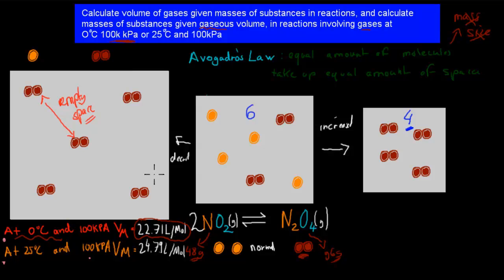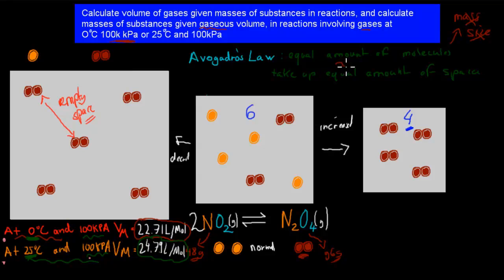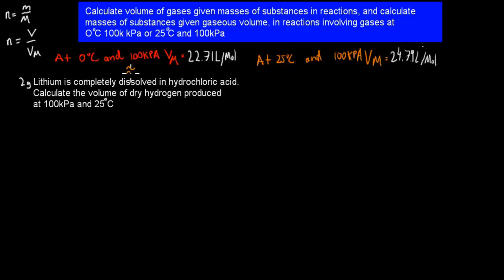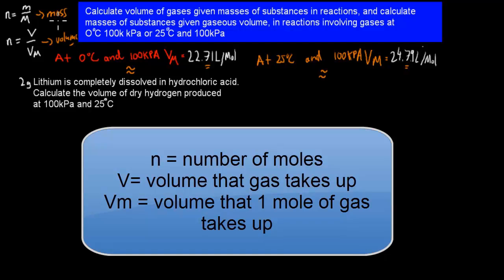One mole takes up 22.71 liters of volume at 0°C and 100 kPa. The only difference between those two formulas is the temperature. At 25 degrees Celsius, one mole takes up a different volume — the pressure stays constant at 100 kPa, we just change the temperature. We also have equations to calculate mass if we have moles given, and to calculate volume if we have moles given. We'll be using all of these in these types of calculations.